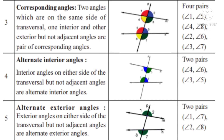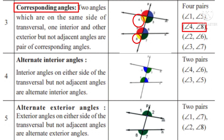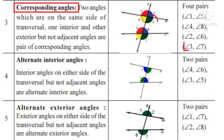Number 3: corresponding angles. Two angles are said to be corresponding angles if they lie on the same side of the transversal but one is interior and the other is exterior. Here angle 1 and angle 5 is one pair; angle 4 and angle 8 is another pair; angle 2 and angle 6, and angle 3 and angle 7 are the corresponding angles.